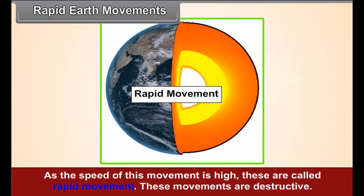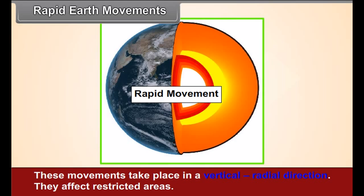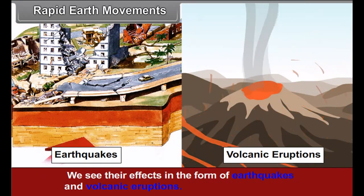These movements are destructive. These movements take place in a vertical, radial direction. They affect restricted areas. We see their effects in the form of earthquakes and volcanic eruptions.